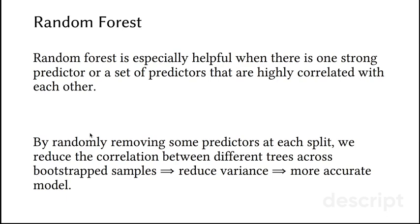Why is this helpful? Random forest is helpful exactly when there is one strong predictor which overshadows all other predictors. But all other predictors can be also useful, but simply because there is one strong predictor, we are never able to use the other predictors. Another thing is that by randomly removing some predictors at each split, we reduce the correlation between different trees across bootstrapped samples. Remember, we want to reduce variance of our models. And by reducing this way correlation between different models that we train across different samples, we are able to get a more accurate model.